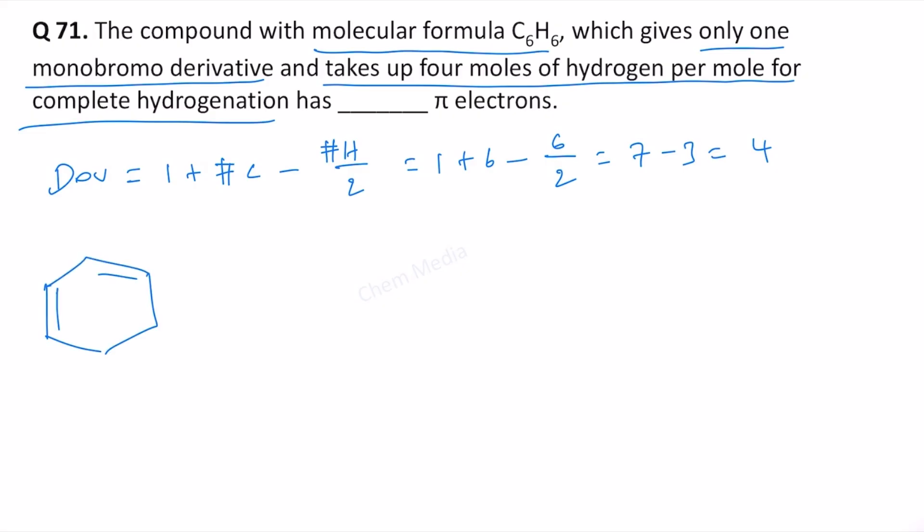Benzene has 3 pi bonds and 1 ring, accounting for the degree of unsaturation of 4. This means 6 pi electrons because each pi bond has 2 electrons. Benzene gives a monobromo derivative with Br2 in the presence of FeBr3 through electrophilic aromatic substitution, yielding bromobenzene.